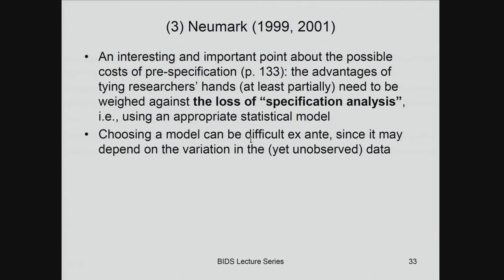The Newmark approach is very close to what we're calling registered reports — it's sort of a forgotten episode. Pre-specifying ties your hands, and if you get the specification wrong, that's a problem. But hopefully you'll just admit it and run a better specification and explain why. One thing Newmark does, which everyone who pre-specifies should do, is clearly denote everything that wasn't pre-specified in his paper — showing results both ways but explaining which he thinks is right. Any deviation from the plan must be well documented, or else what's the point?